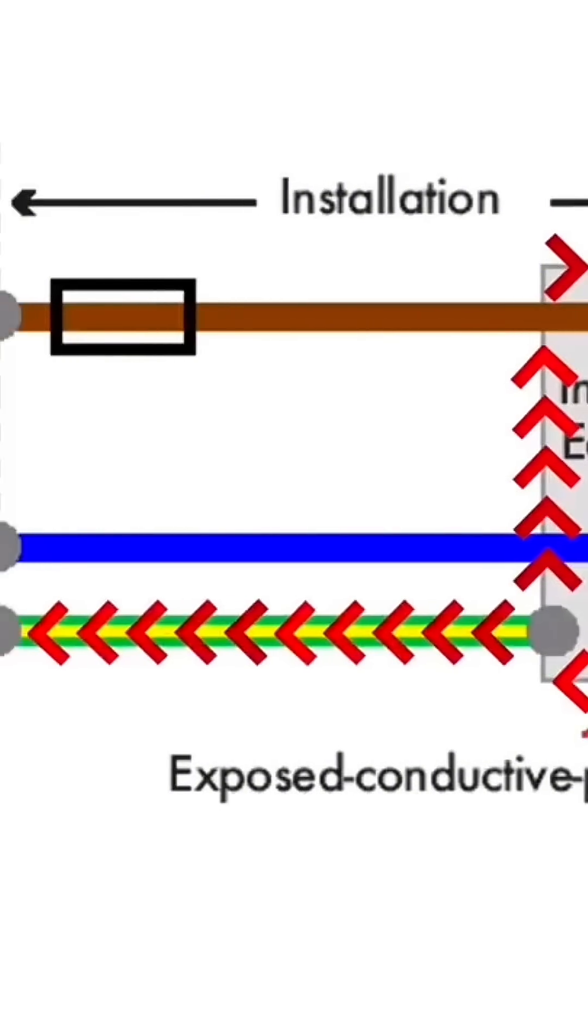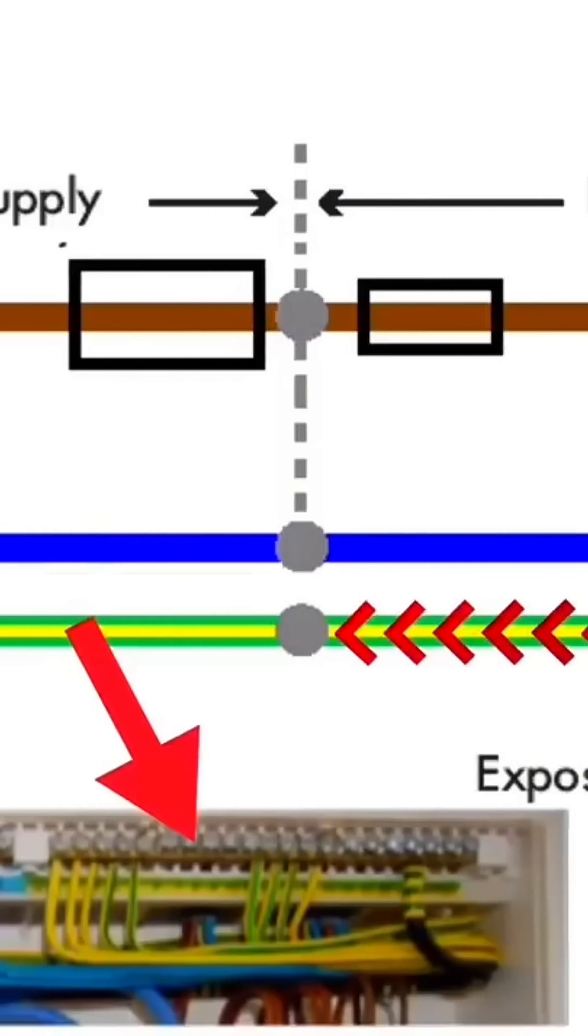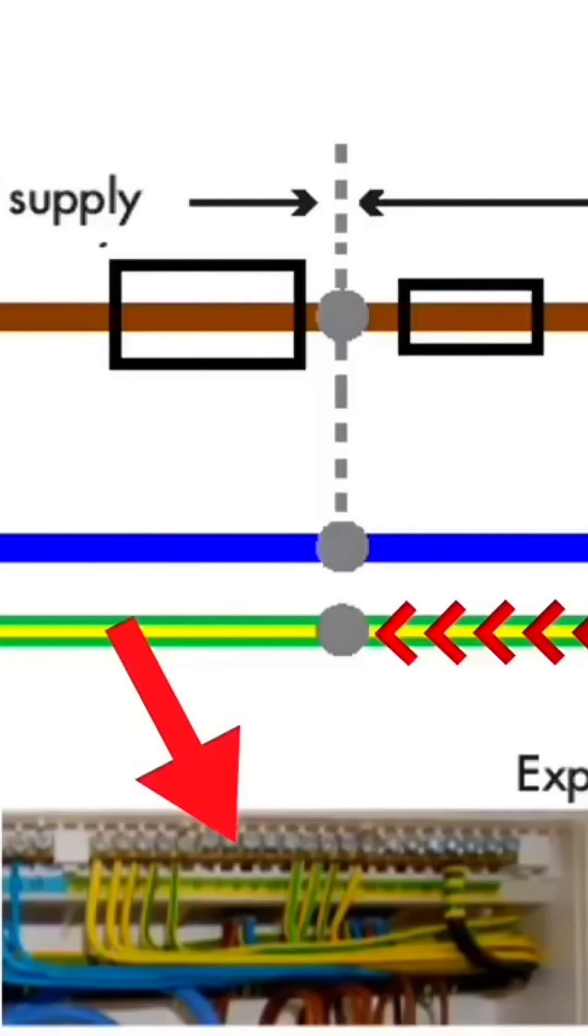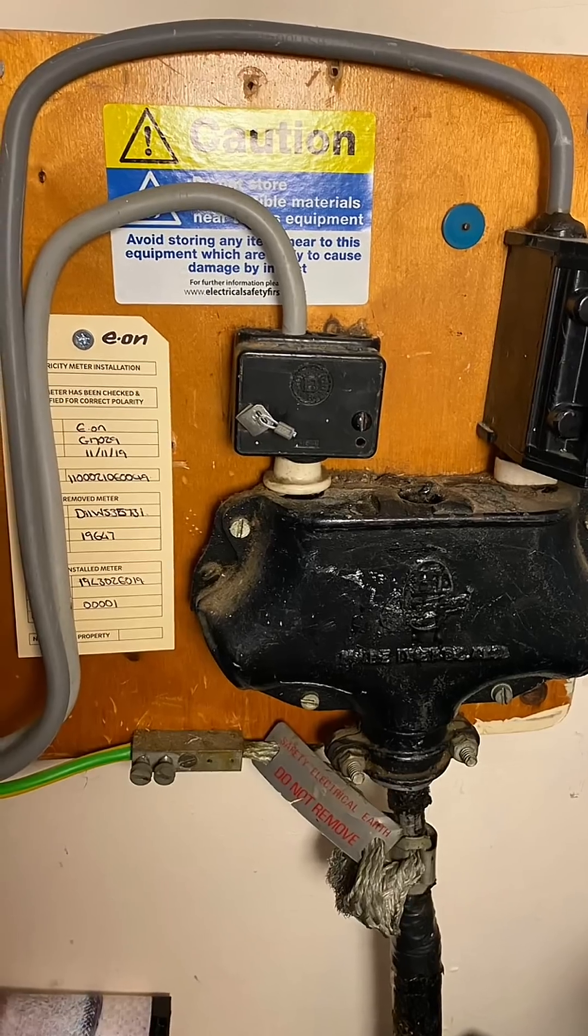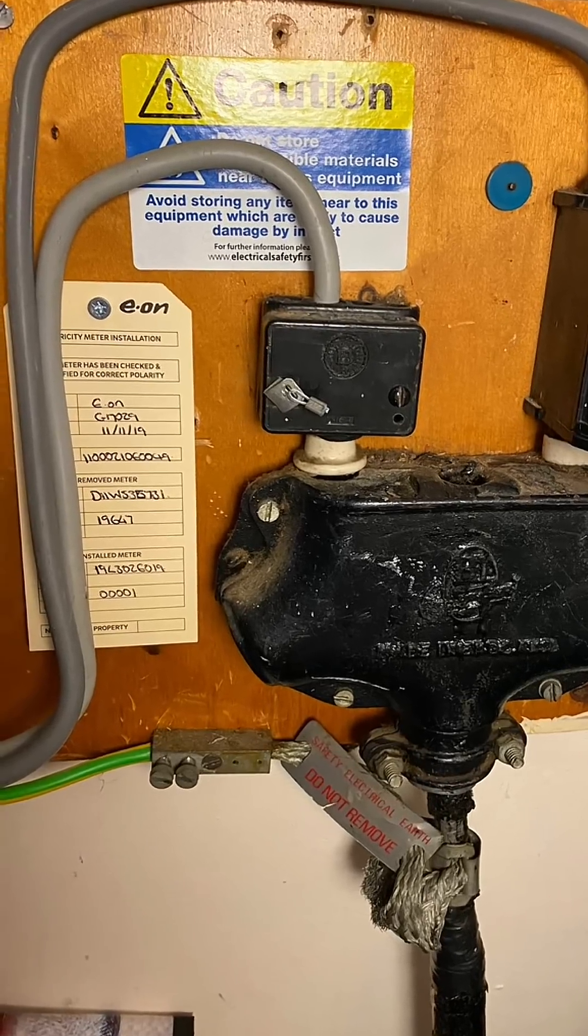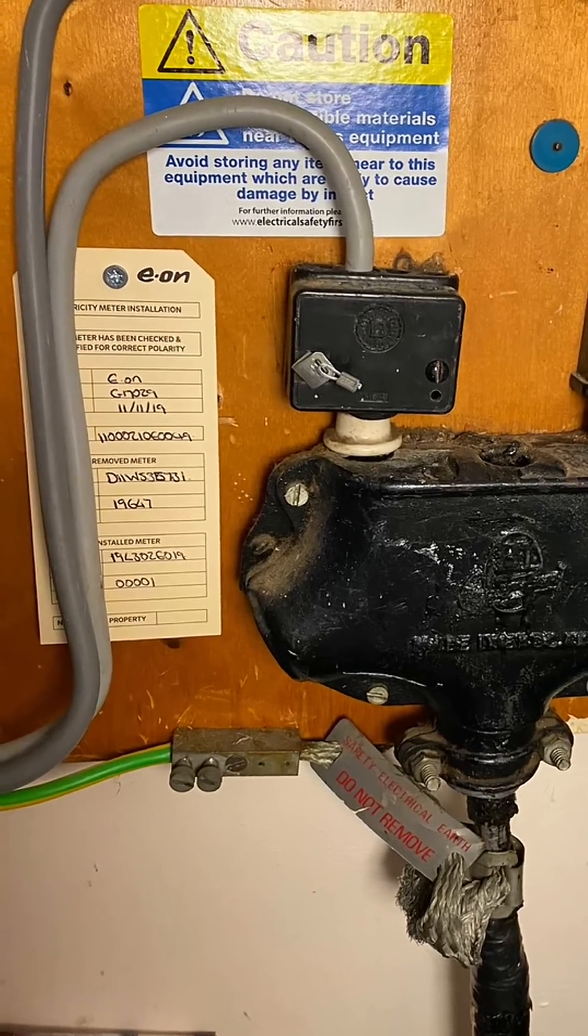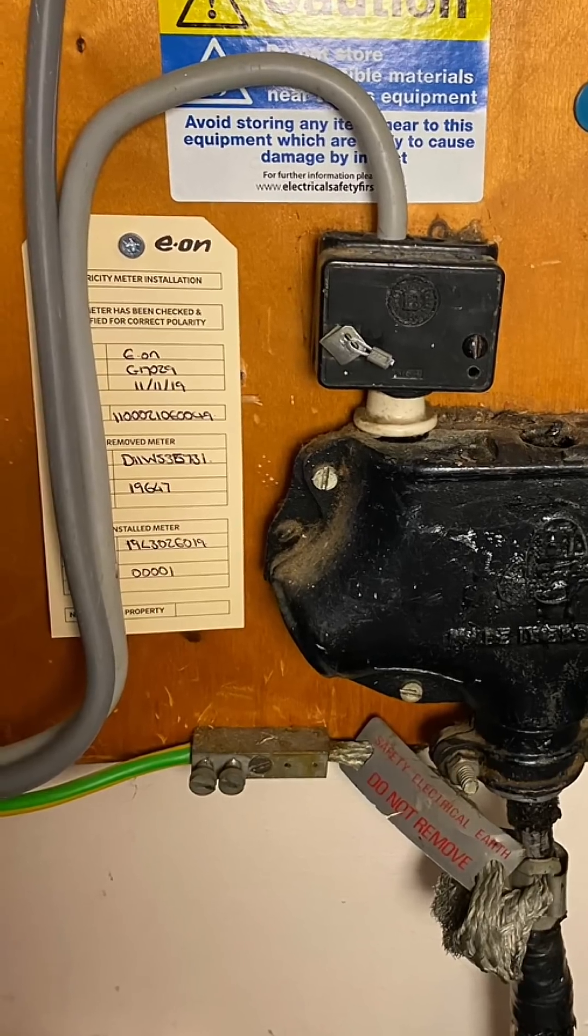This goes back to the earth terminal situated within the consumer's unit which would become live. This is connected to the incoming earthing conductor which comes in with the double insulated meter tails. This earthing conductor becomes live.